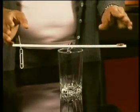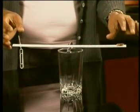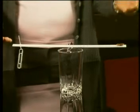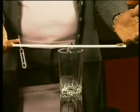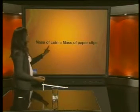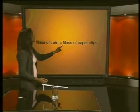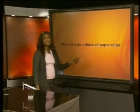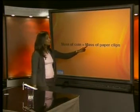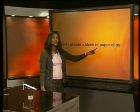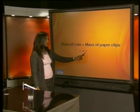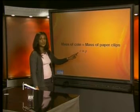Now even though we are comparing different quantities of objects — one coin and three paper clips — the mass of the coin and the paper clips are the same. We can say that the mass of the coin is equal to the mass of the paper clips. If we represent the mass of the coin by C and the mass of the paper clips by P, we can write C is equal to P. This is an equation.